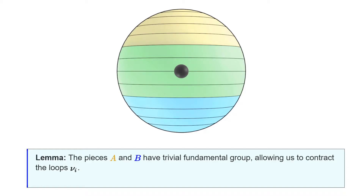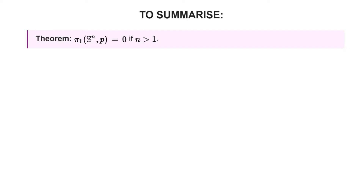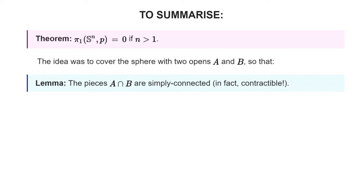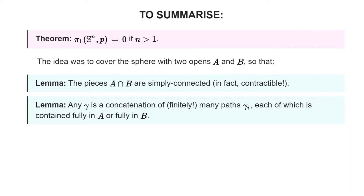Let us do a quick recap of what we've just said. We've proven that the fundamental group of all the higher dimensional spheres is zero. The idea was to cover the sphere with two opens homeomorphic to disks, and therefore simply connected. The simply connectedness of the pieces is of course very particular to this example, but there are two ingredients that we used that are general. The first says that any loop can be written as a concatenation of finitely many paths, each of which is contained in one of the pieces. We then combine this with another general lemma that says that if the intersection is path-connected, then we can homotope this concatenation of paths into a concatenation of loops contained in each of the pieces. Our next goal is to adapt these ingredients to the general case.